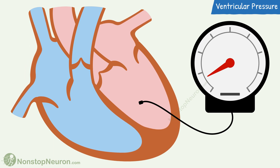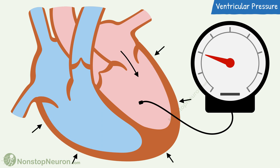We will start our discussion with atrial systole. During this, contraction of the atria pumps blood into the ventricles, causing a rise in ventricular pressure. By this time, the impulse has stimulated the ventricular musculature, so the ventricles start contracting. The rise in ventricular pressure closes the atrioventricular valves.